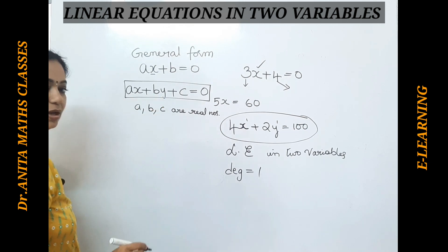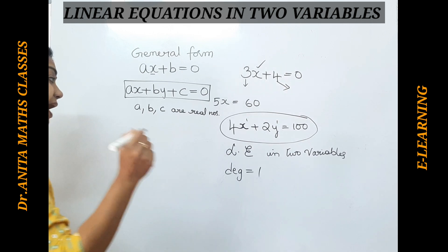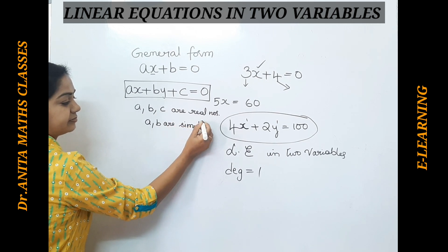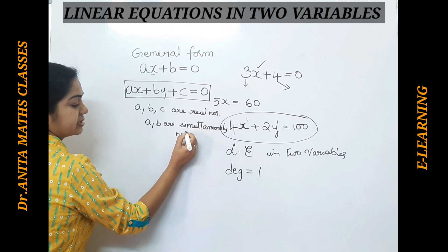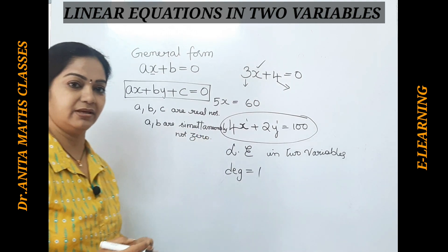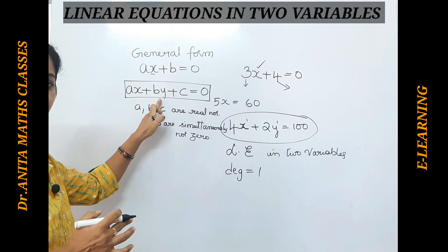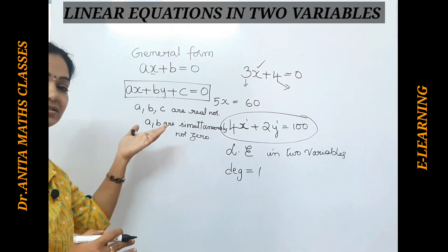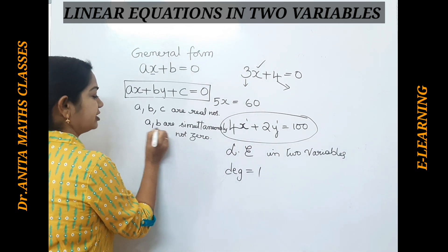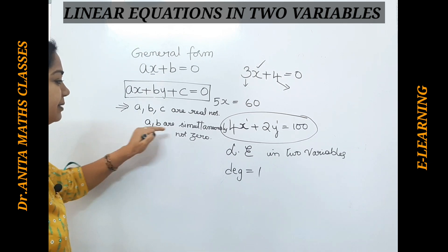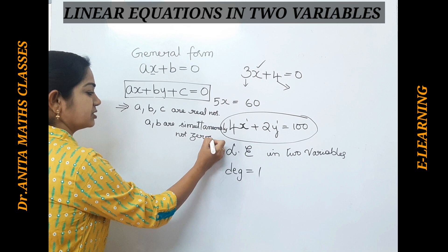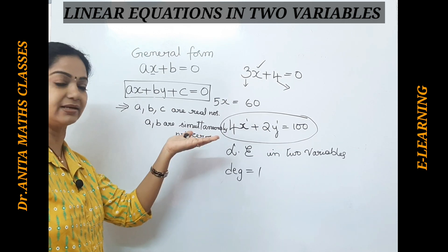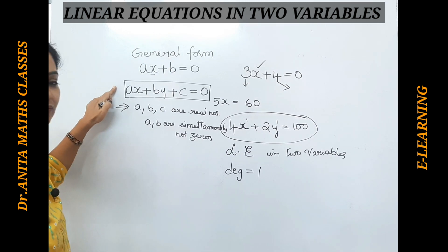Here a and b are the coefficients and c is a constant — all three are real numbers. Another condition is that a and b are simultaneously not zero. Simultaneously means at a time: if a is zero, the x term disappears; if b is zero, the y term disappears, leaving only the constant equal to zero, which is not a linear equation in two variables. So one of them can be zero, but both must not be zero at the same time.